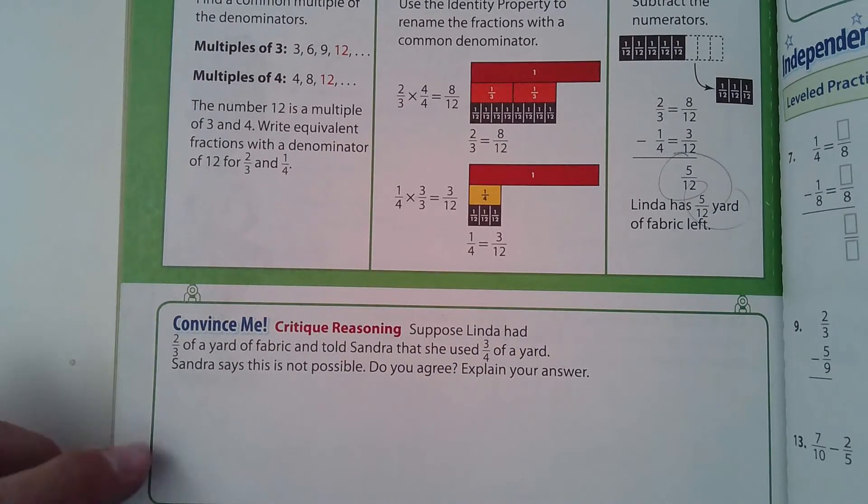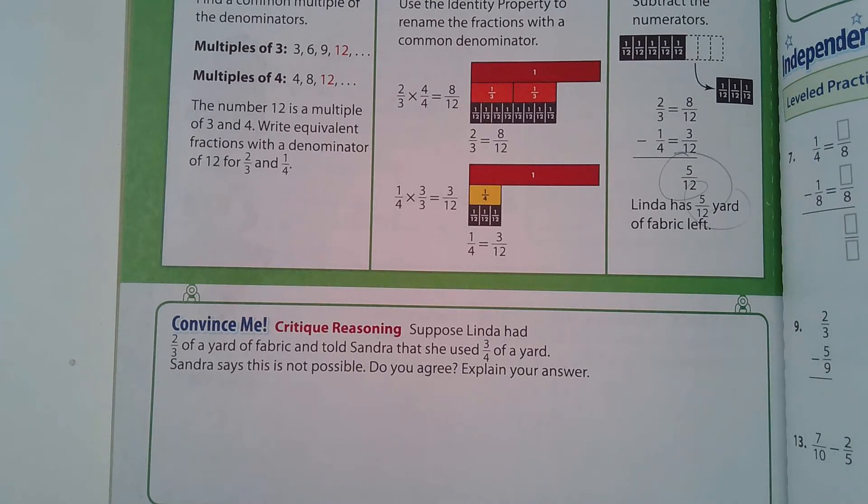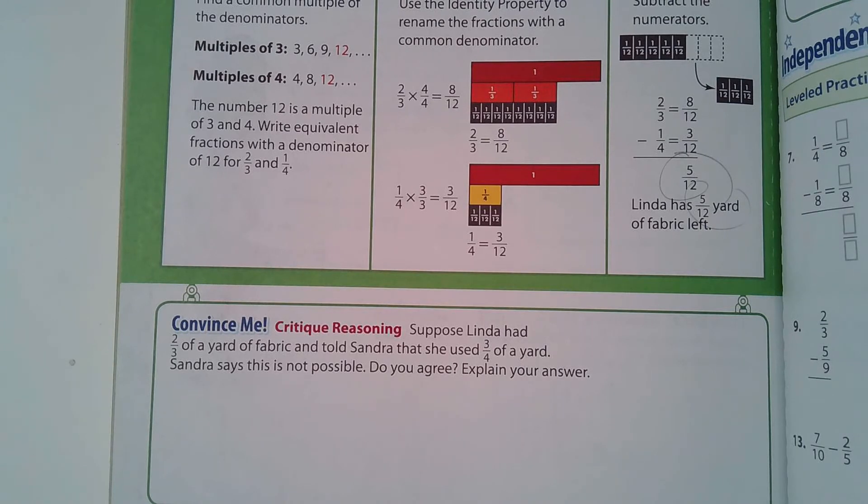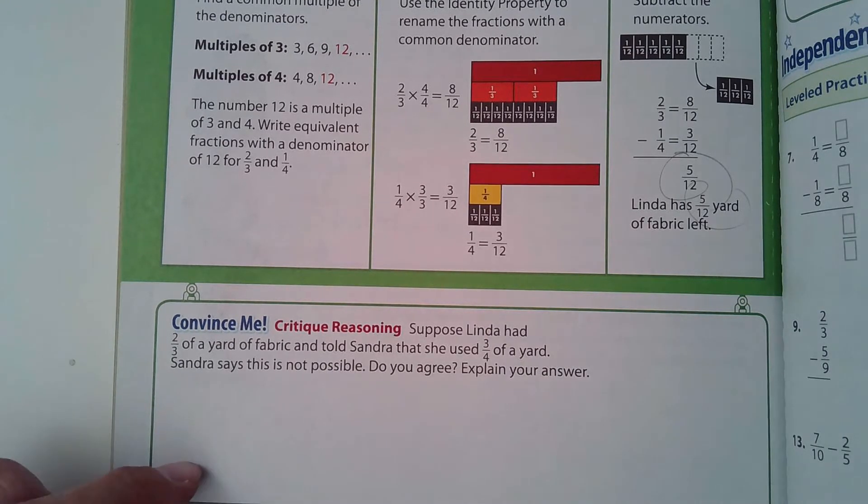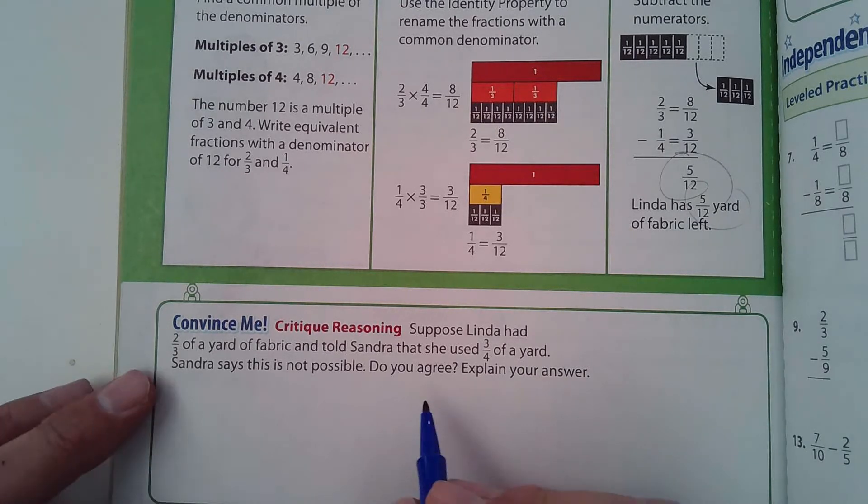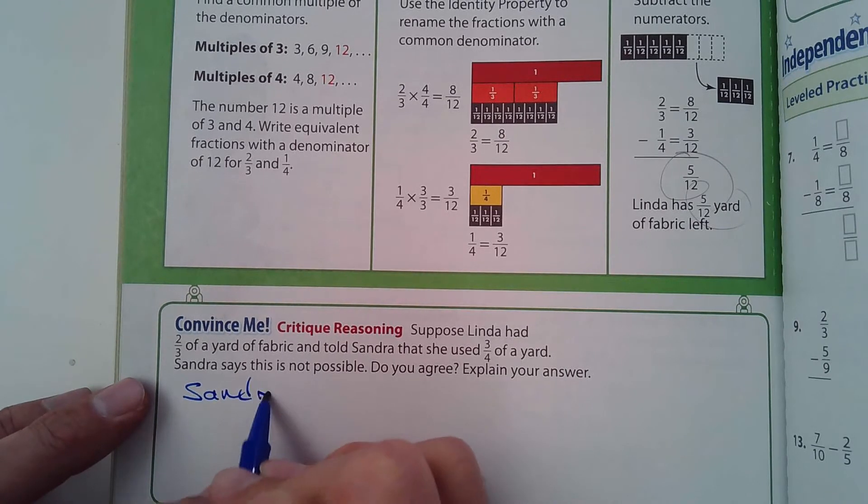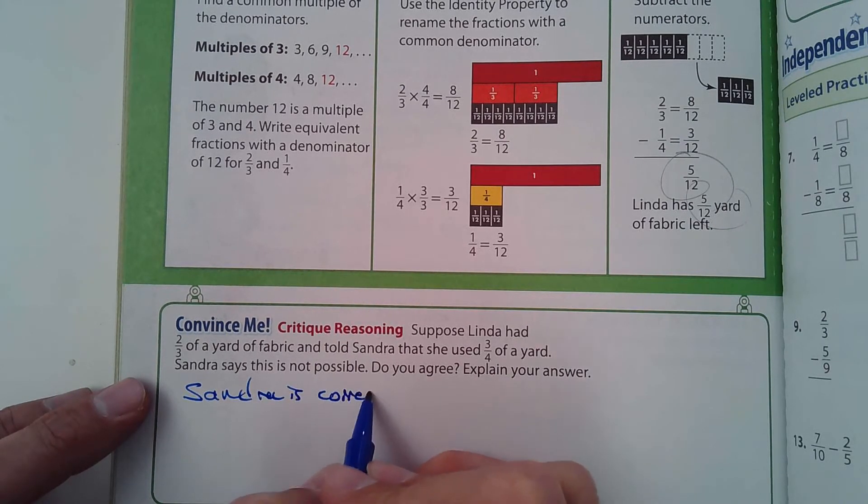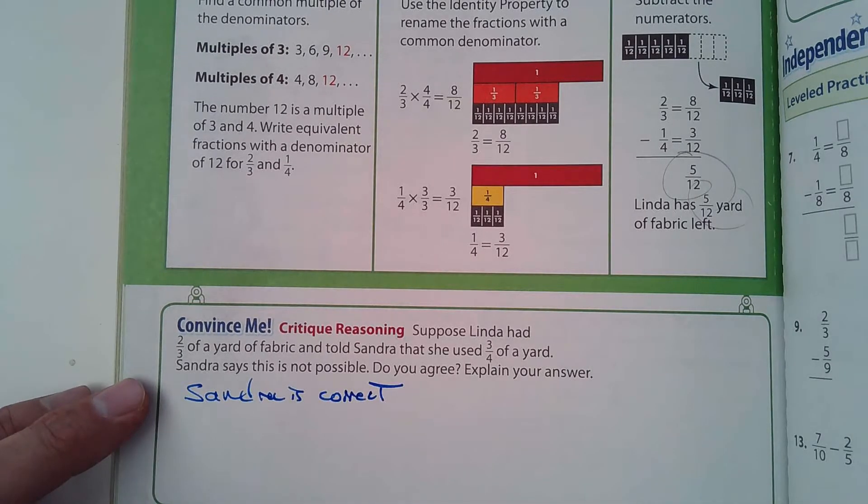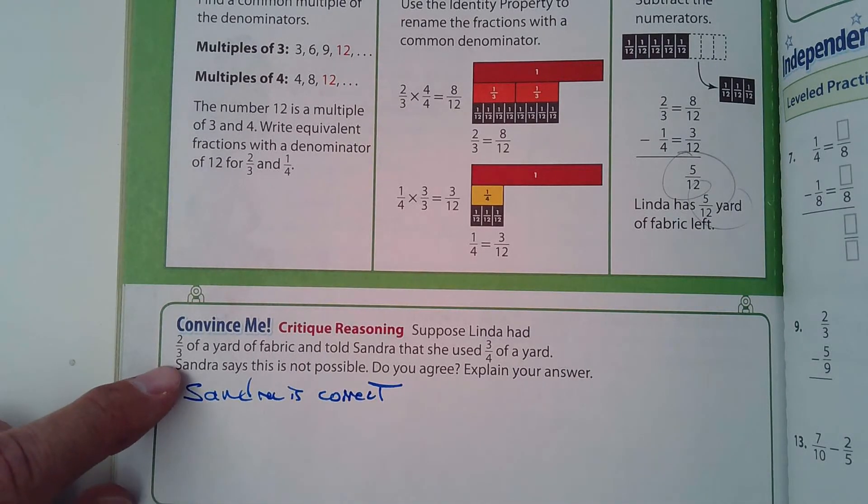It says, suppose Linda had two-thirds of a yard of fabric and told Sandra that she used three-quarters of a yard. Sandra says, this is not possible. Do you agree or not? And then explain your answer. She cannot.